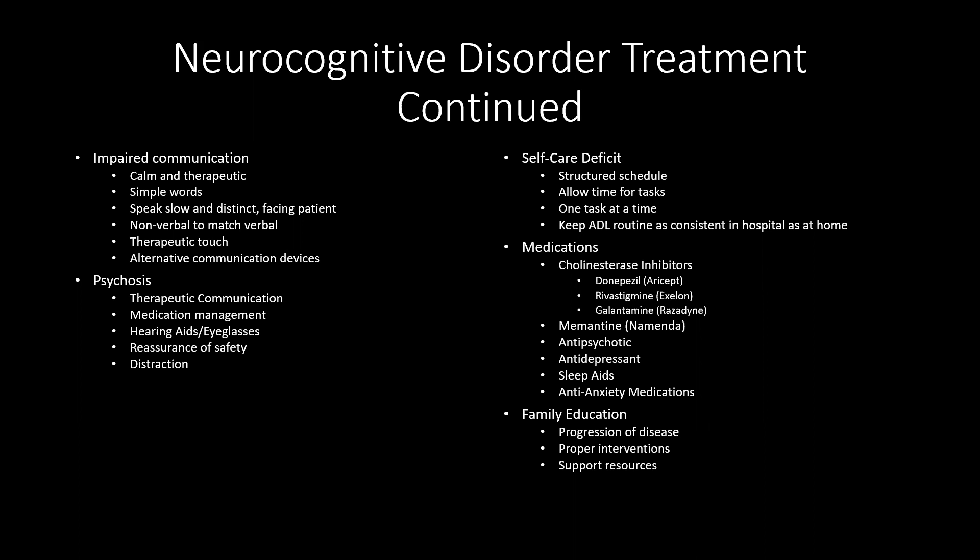Having a family member with a neurocognitive disorder can be very distressing, especially as the individual loses awareness of who family members are, or if the patient is aggressive or difficult to care for. We would want to educate the family on the progression of the disease, proper interventions, and supportive resources.